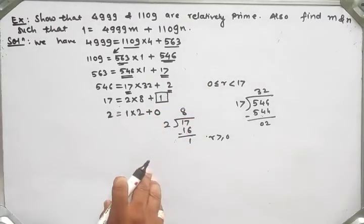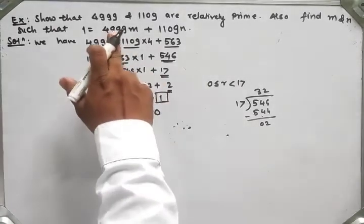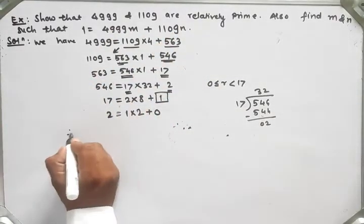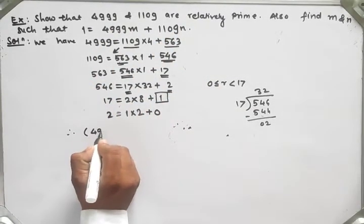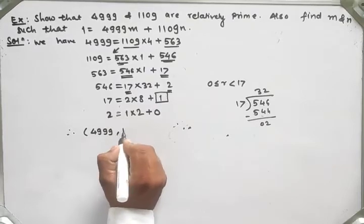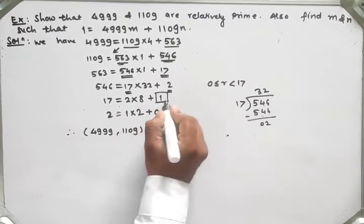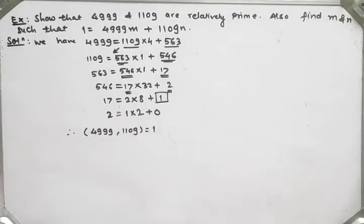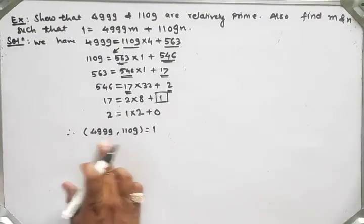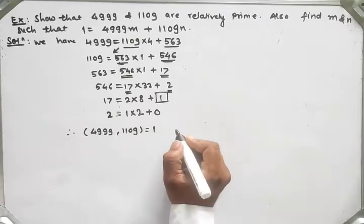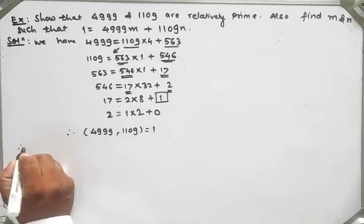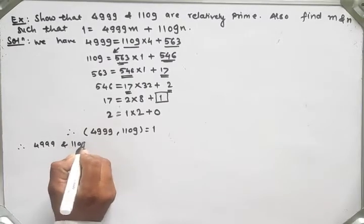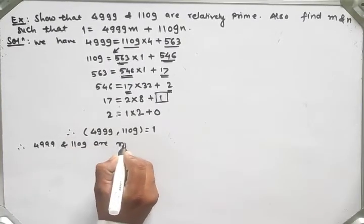Since remainder is 0, the number just above 0 in the sequence is 1. Therefore, GCD of 4999 and 1109 is 1. We say that 4999 and 1109 are relatively prime.